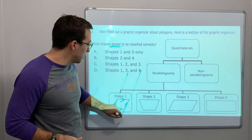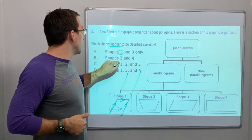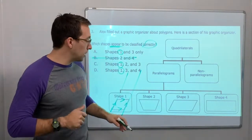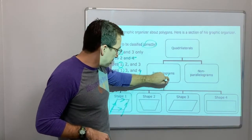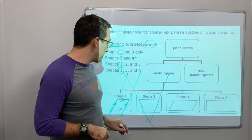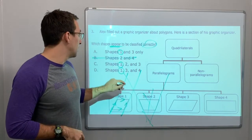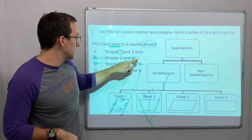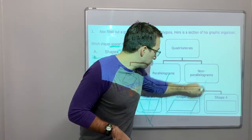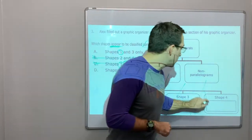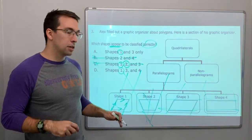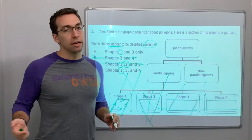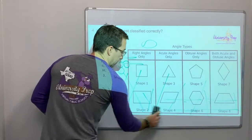Shape one looks good — it appears parallel on both sides. Shape two is a trapezoid; those lines look like they're going to intersect at the bottom, so two is not correct — C is not correct. Shape three looks correct, and shape four is a rectangle, so we know rectangles are parallelograms because opposite sides are parallel. Shapes one, three, and four are all correct — D is our answer.